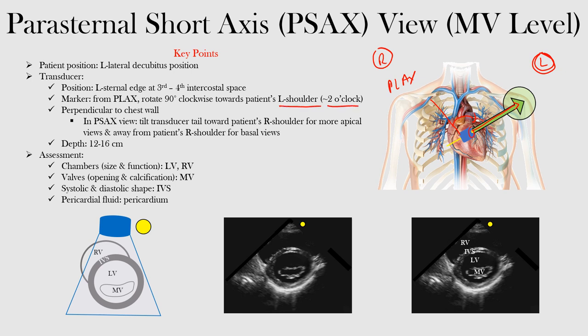The marker is directed towards about two o'clock, the patient's left shoulder. What's different from the aortic valve level is you have the transducer perpendicular to the patient's chest wall. If we want to look at more apical views, what we do is tilt the transducer's tail towards the patient's right shoulder.